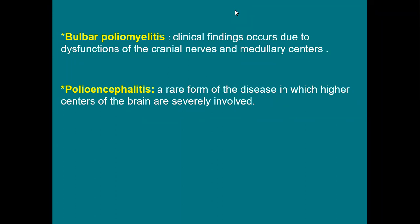The vocal cords are also supplied by the vagus nerve, and paralysis of one or both vocal cords leads to dysphonia and asphyxia. Medullary center involvement of the cardiac center causes cardiac arrhythmia, and can cause hypertension or hypotension. Respiratory center involvement causes irregular respiration. This is bulbar poliomyelitis due to involvement of these sites in the medulla oblongata.